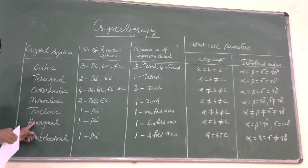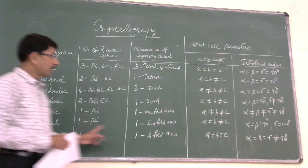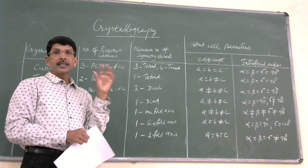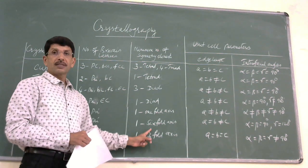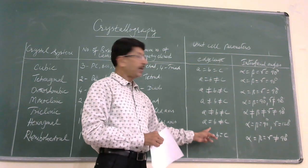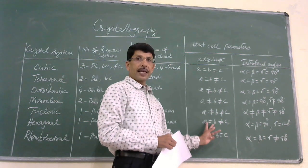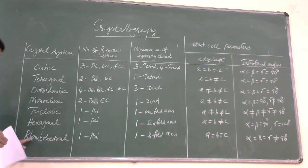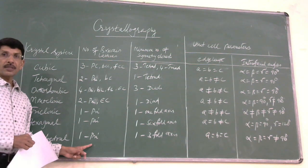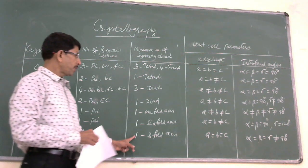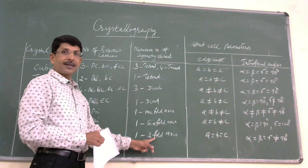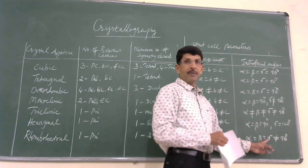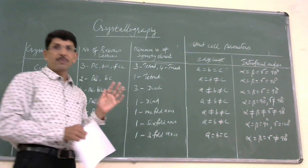In the hexagonal system, only one type of arrangement is possible and it has a minimum of one six-fold axis. Two sides are equal and the third side is different in length. Two of the angles are equal to 90 degrees and the third is equal to 120 degrees. In the rhombohedral system, only one type of arrangement is possible — the primary arrangement. All three sides are equal in length and all three angles are equal to each other, but they are not equal to 90 degrees.